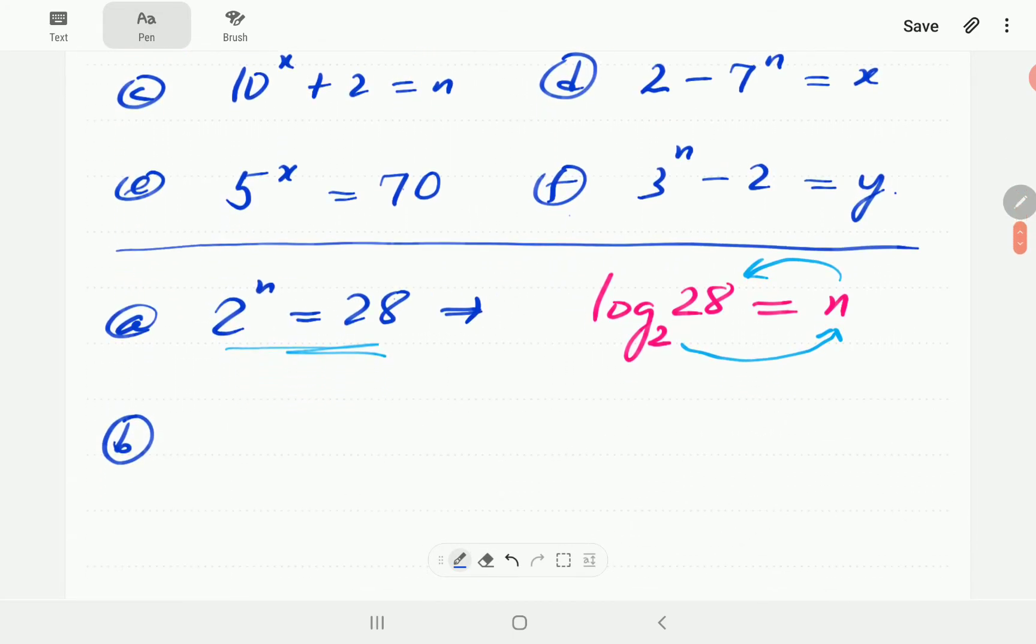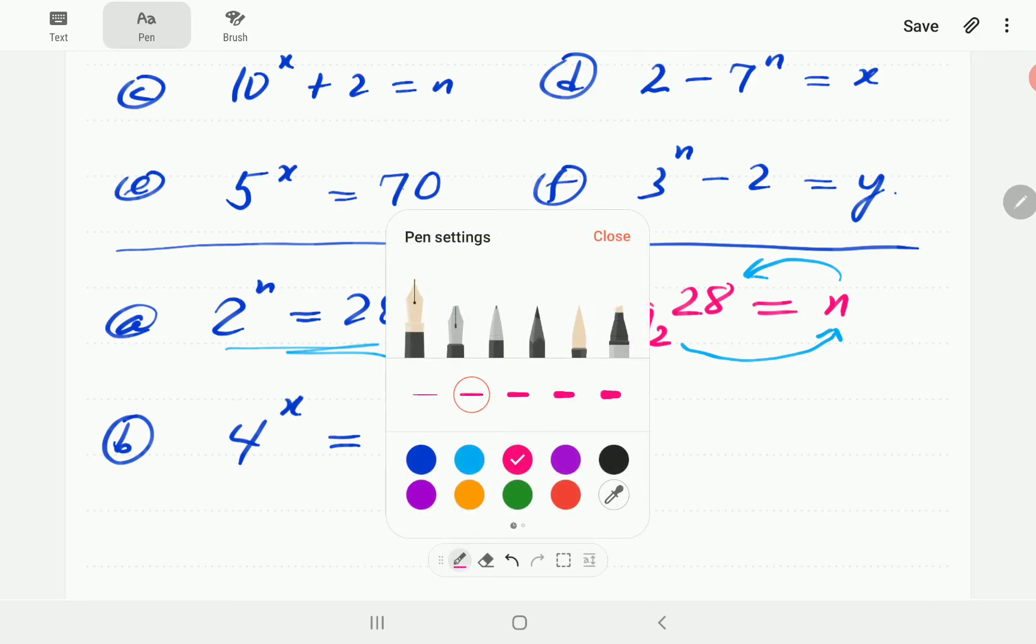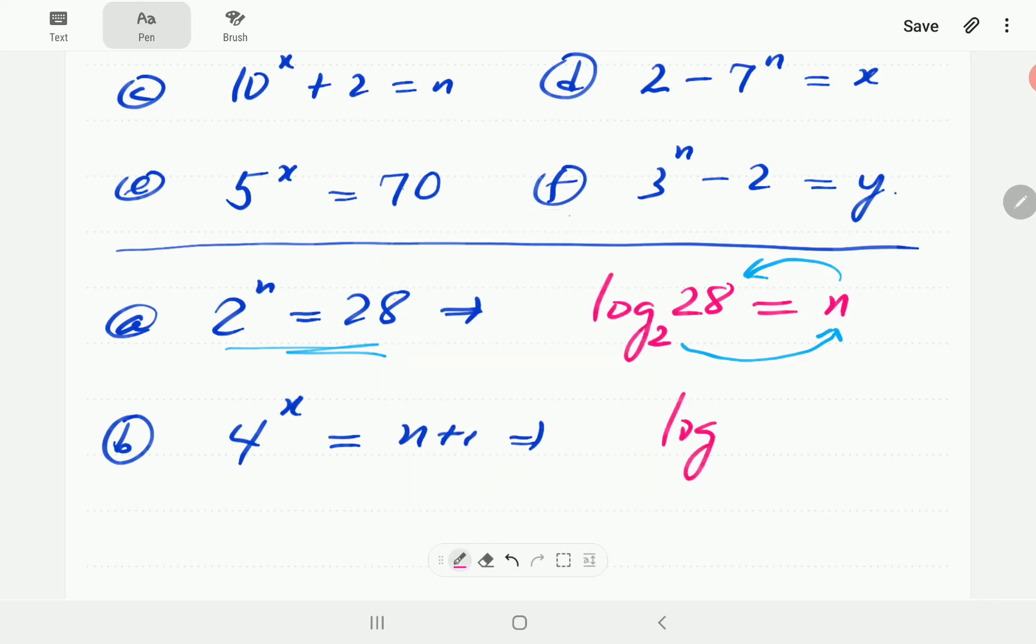In b, we have 4 to the power x is equal to n plus 1. So again here, if we write log, the right-hand side must be the power or the exponent. So x goes there. The base is 4, and so n plus 1 fits in there. So log n plus 1 base 4 is equal to x.